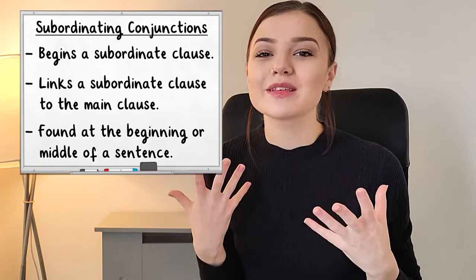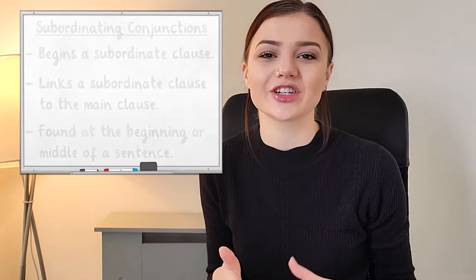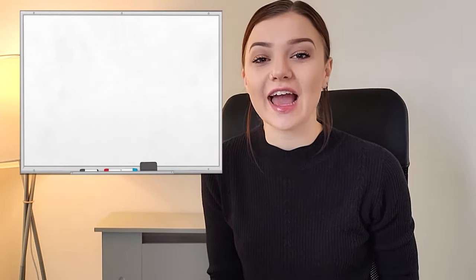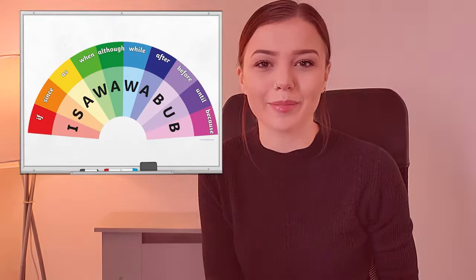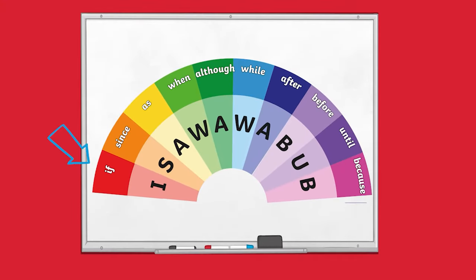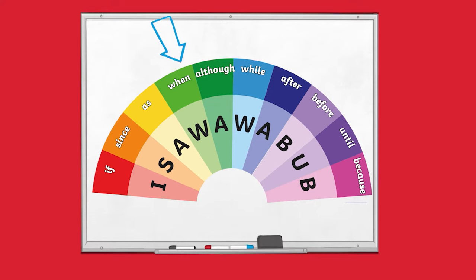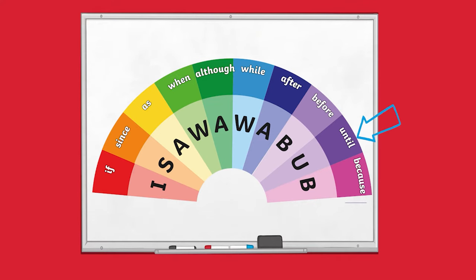You can remember some of the most useful subordinating conjunctions using the acronym 'I SAW A WABUB'. This shows us that if, since, as, when, although, while, after, before, until, and because are all examples of subordinating conjunctions.